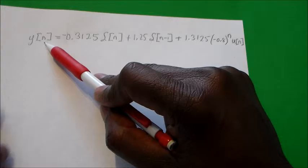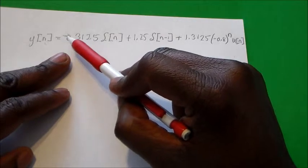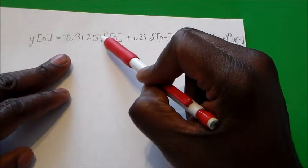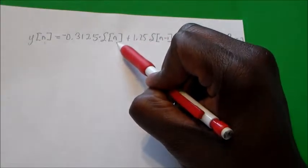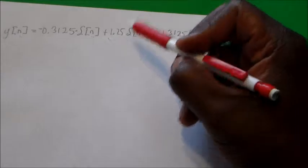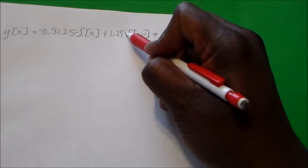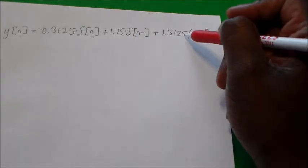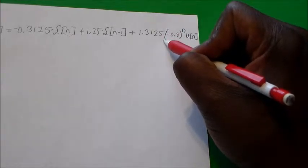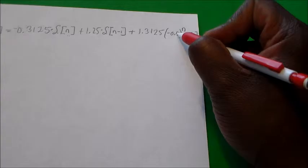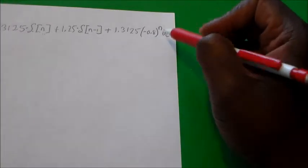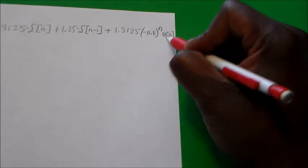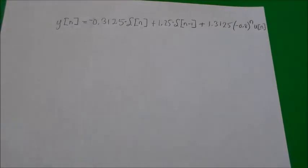So this is the final answer for the iterative solution to that difference equation. y of n, where n is discrete time, equals negative 0.3125 times the delta function — not delayed — plus 1.25 times the delta function delayed by 1, plus 1.3125 times negative 0.8 raised to the nth power, all multiplied by the unit step. Please check my website for additional Z-transform and inverse Z-transform problems, and check YouTube.